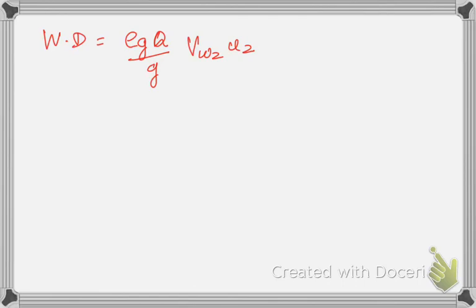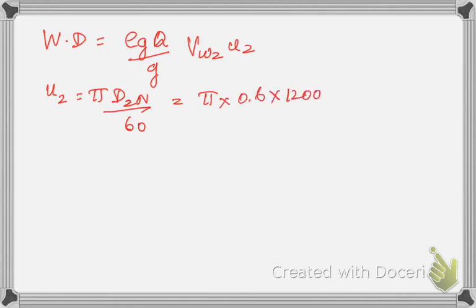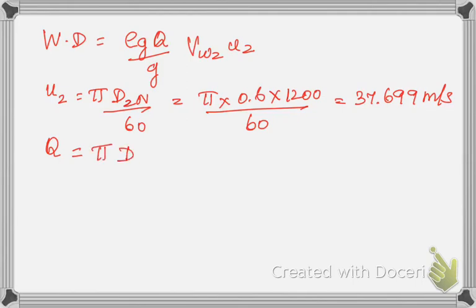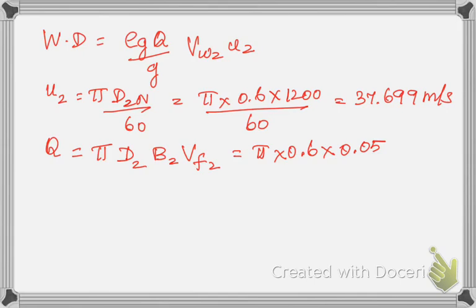First, u2 = π d2 N / 60 = π × 0.6 × 1200 / 60 = 37.699 m/s. Next, for Q in a centrifugal pump: Q = π × d2 × b2 × vf2 = π × 0.6 × 0.05 × 3 = 0.283 m³/s.